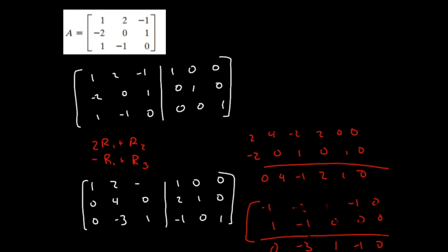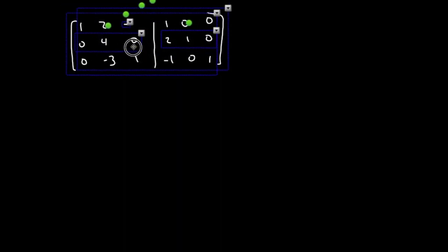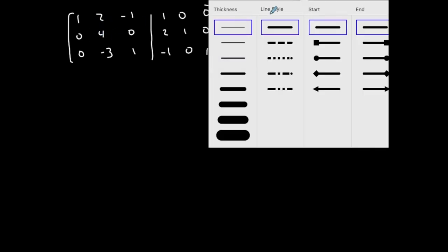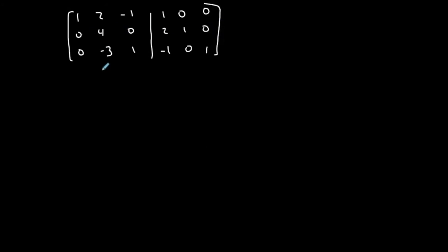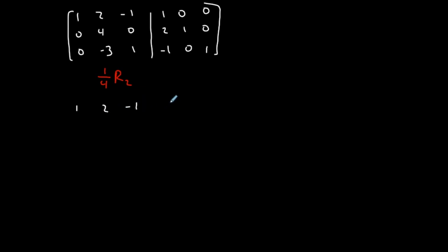I'm not done yet, but I have zeros in the right places. I'm trying to get the identity matrix here, so next I need to create a 1 in the second diagonal position. I'll do one-fourth times row two. Row one stays: 1, 2, negative 1 | 1, 0, 0. Row two becomes: 0, 1, 0 | one half, one fourth, 0. You might see fractions — it happens, but not a great time.